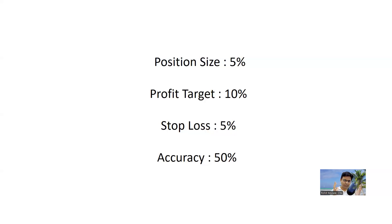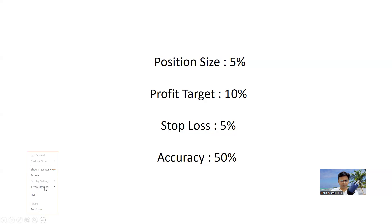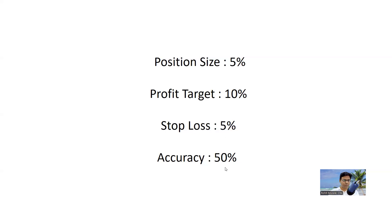In this video, I want to discuss the basic mathematics of trading. This is very important — as a professional trader, you have to understand this. Let's assume that your position size is 5% on each trade you take, your profit target is 10%, and your stop loss is 5%. And let's assume that you have an accuracy of 50% — 50% are winners and 50% are losers.